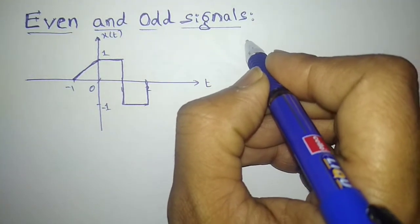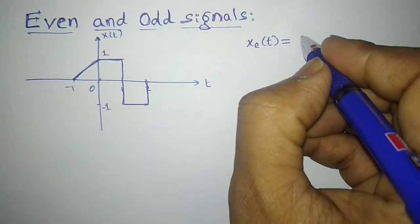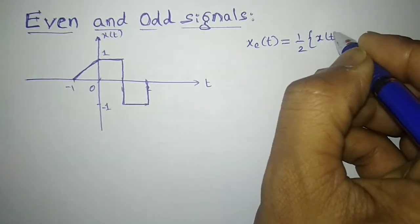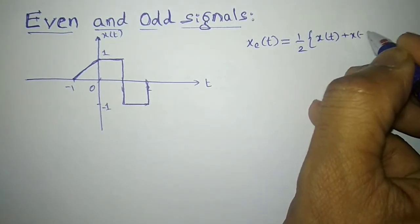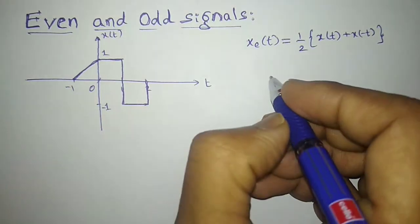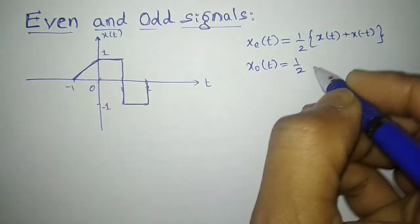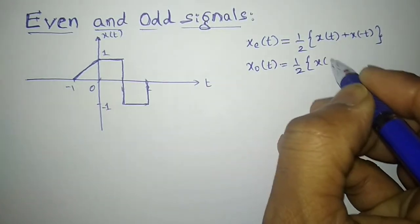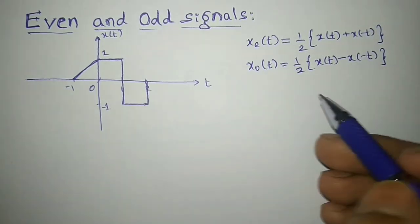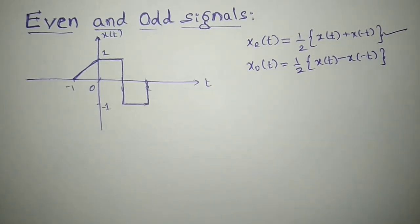For this, I should know what is the even part of the signal. The formula is xe = (1/2) * [x(t) + x(-t)]. That is the formula to sketch the even part of a signal. For the odd part, xo = (1/2) * [x(t) - x(-t)]. That is the formula to sketch the odd part. So first we shall consider the formula of the even part, xe.